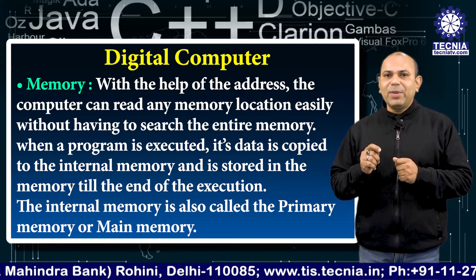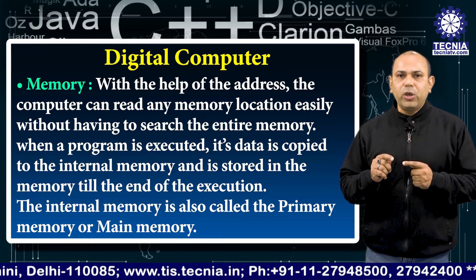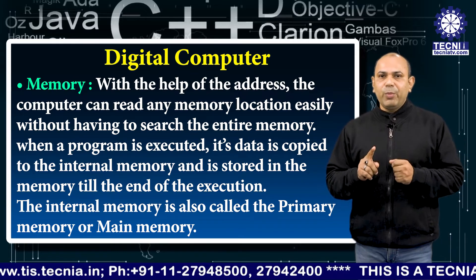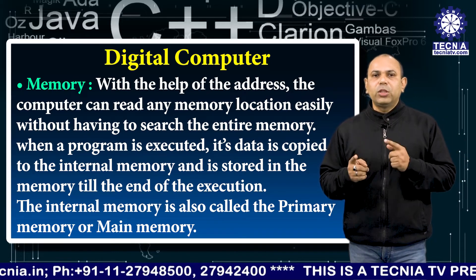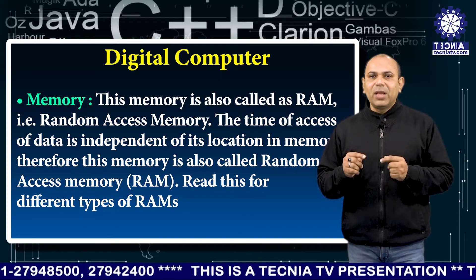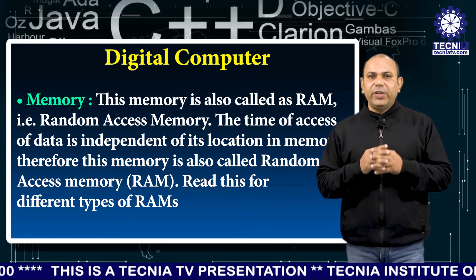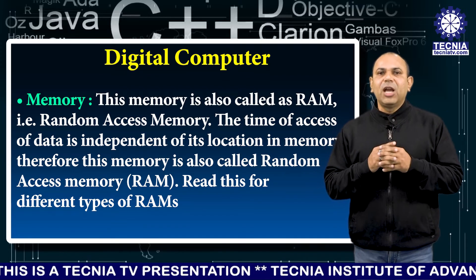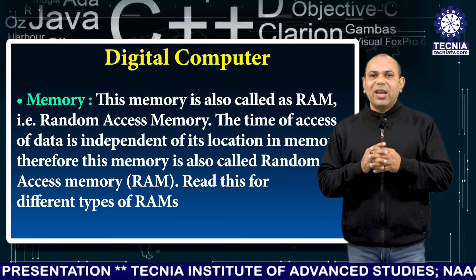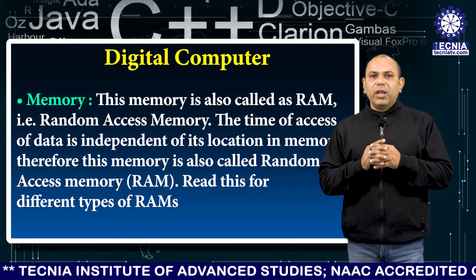When a program is executed, its data is copied to the internal memory and is stored there until the end of execution. The internal memory is also called primary memory or main memory. It is also called RAM — random access memory — because the time of access of data is independent of its location in memory.